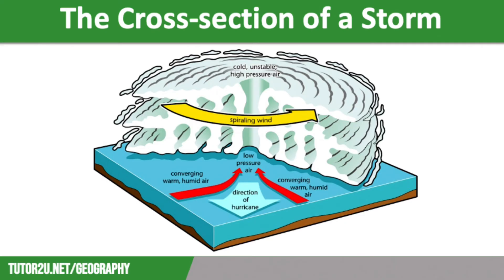In the centre of the storm, the conditions are calm with no wind or rain. This is called the eye of the storm. The sun is able to get through here so it is warmer; however, air pressure is very low. On the other side of the eye, the wind and rain dramatically increases again. The temperature drops and the air pressure starts to rise. And at the end of the tropical storm, there is a rise in pressure and temperature, and winds and rain will decrease.